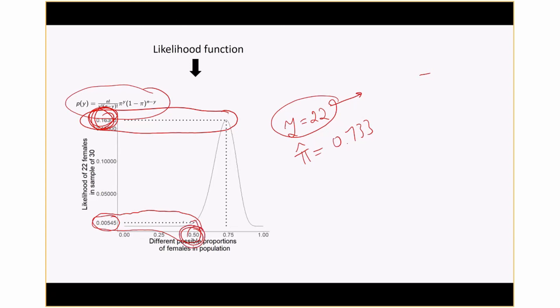In contrast, the likelihood associated with having an equal number of males and females in the population is 0.00545, and the ratio of 0.163 over 0.005 is approximately 30. This is not null hypothesis statistical testing, but if you consider the fact that the likelihood associated with what we observed is 30 times greater than the likelihood associated with equal numbers of males and females, that provides some pretty strong evidence that there are actually more females than males in the population, even though we're not doing formal null hypothesis statistical testing.